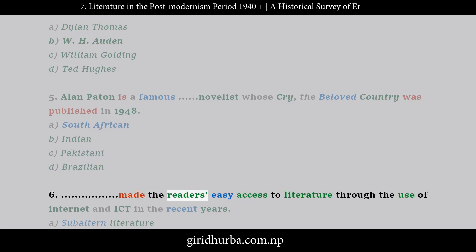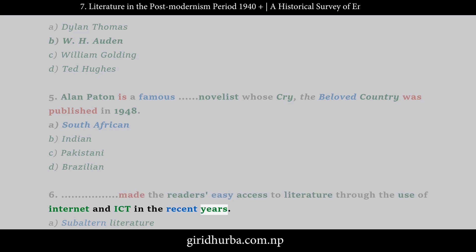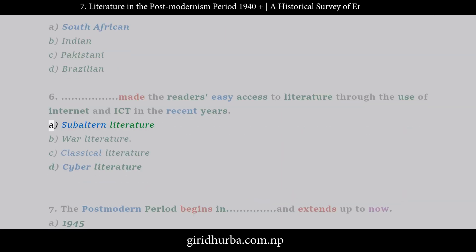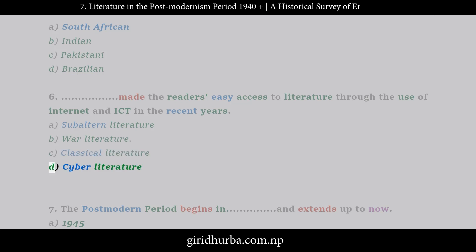Question 6: Which made readers have easy access to literature through the use of Internet and ICT in recent years? A. Subaltern Literature. B. War Literature. C. Classical Literature. D. Cyber Literature.